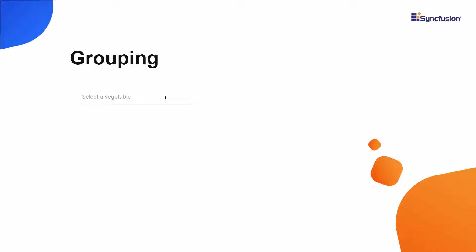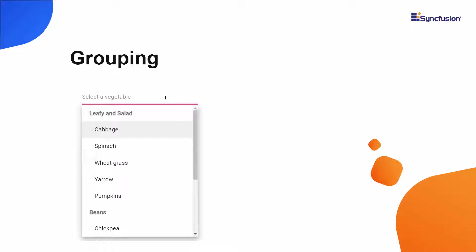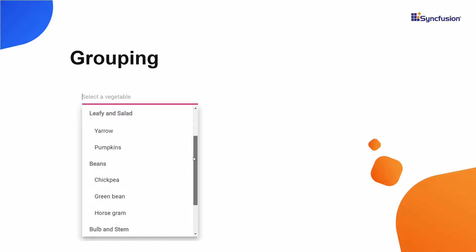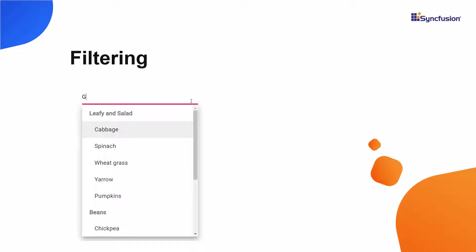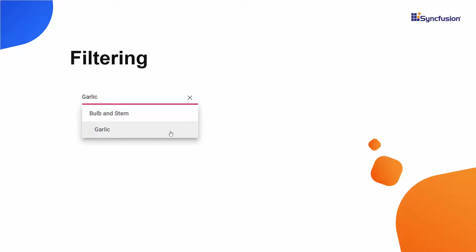Look at this example — you can see the multi-select drop-down displaying different vegetable names. These vegetables are grouped under different categories like leafy and salad, beans, and bulb and stem. You can also filter the multi-select drop-down items based on typed characters.